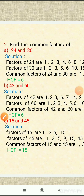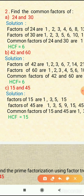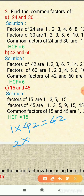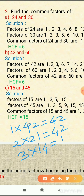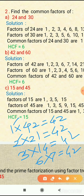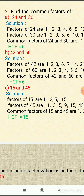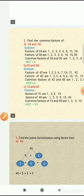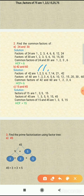The second example is 42 and 60. We will find the factors of 42. The possible combinations of 42 are: 1×42, 2×21, 3×14, and 6×7. So the factors of 42 are: 1, 2, 3, 6, 7, 14, 21, and 42.